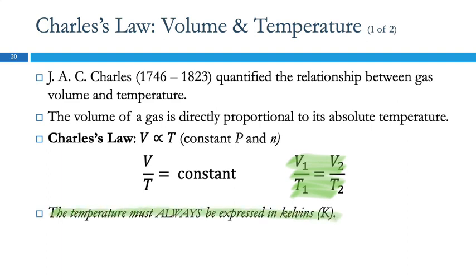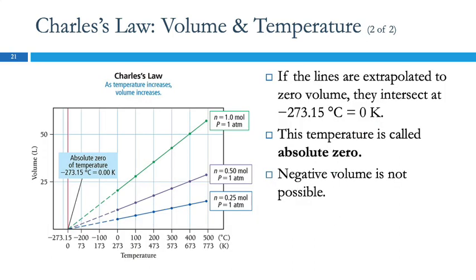Very importantly, because this uses absolute temperature, when dealing with gases the temperature must be in kelvins — we can't use Celsius. If the temperature were zero Celsius, you'd be dividing by zero, which is undefined. If we had below-zero temperatures, one of the temperatures might be negative and we'd get a negative volume — which doesn't work either. The reason the Kelvin temperature scale is important is that it never goes negative.